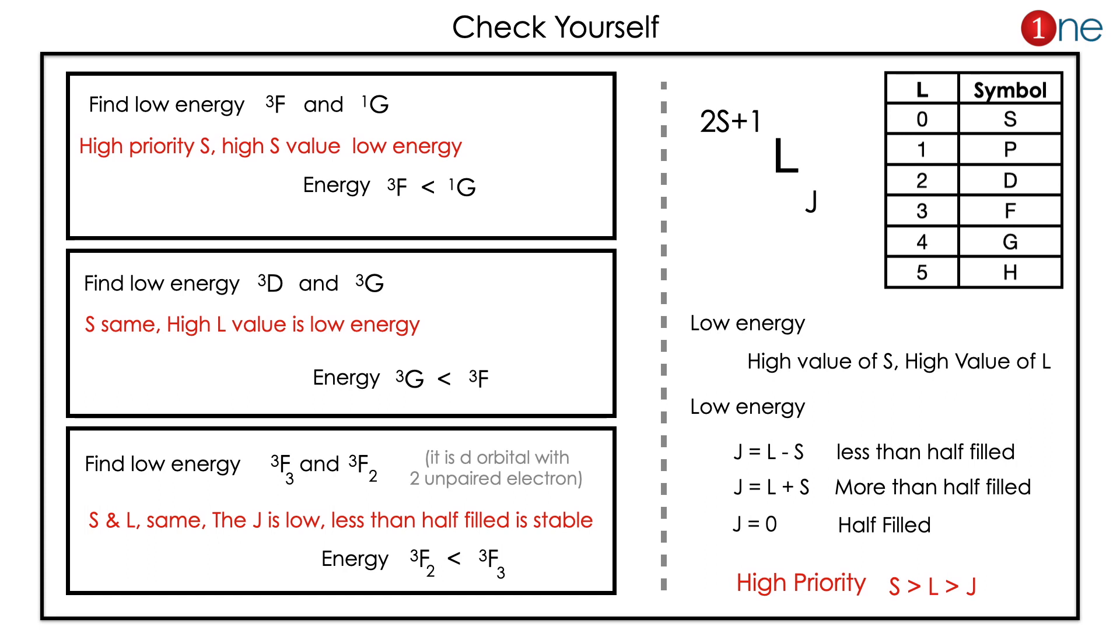Then the second one is low energy between 3D and 3G. Here the spin values are same, so you have to find the L value. For G, L value is higher, so it will have lower energy. So 3G will be lower.